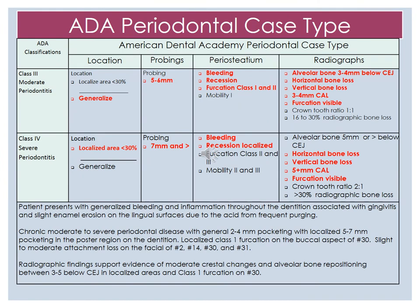Here we have Kim's ADA periodontal case type. Kim is a class 3, which is moderate periodontitis, generalized. Probing depths are 5 to 6 millimeters. She presents with bleeding, recession, and a class 1 furcation. As for her radiographs, she has alveolar bone loss 3 to 4 millimeters below the CEJ, horizontal and vertical bone loss, 4 to 3 millimeter clinical attachment level, and furcation. She also presents with a localized class 4, which is severe periodontitis, affecting less than 30% of the area with 7 millimeter and higher probing depths, bleeding, localized recession, horizontal and vertical bone loss, up to a 5 millimeter clinical attachment loss, and furcation.